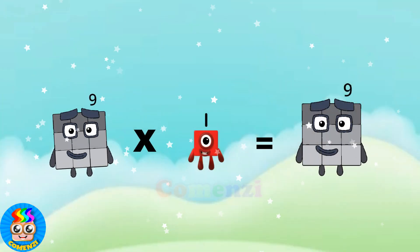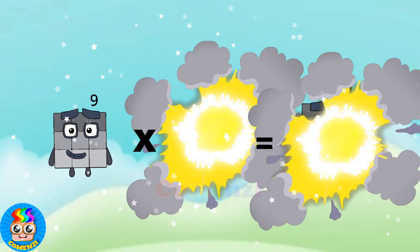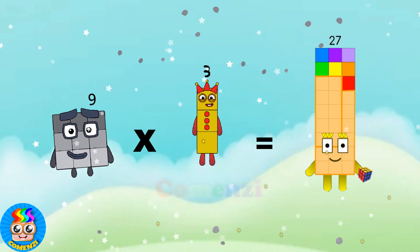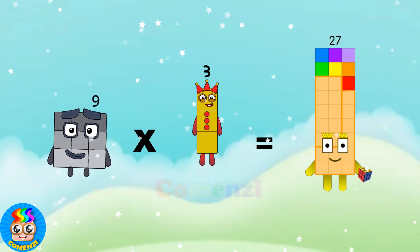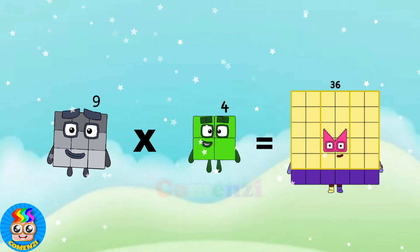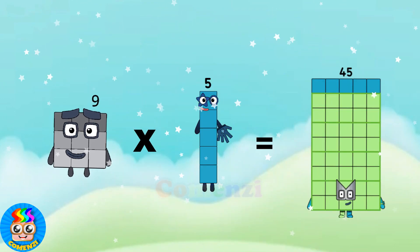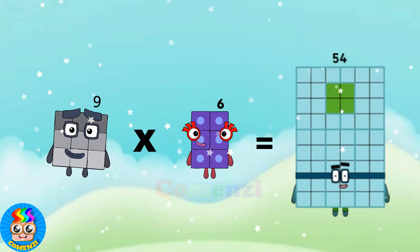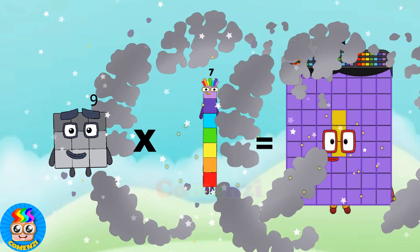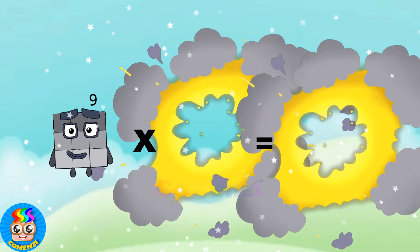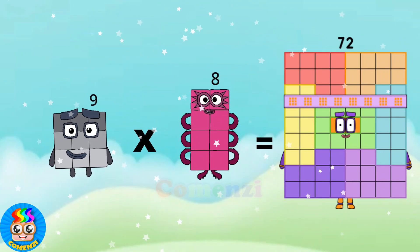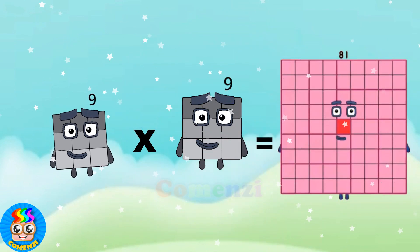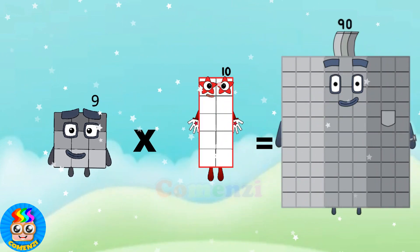9 times 1 is 9, 9 times 2 is 18, 9 times 3 is 27, 9 times 4 is 36, 9 times 5 is 45, 9 times 6 is 54, 9 times 7 is 63, 9 times 8 is 72, 9 times 9 is 81, 9 times 10 is 90.